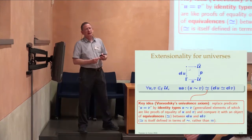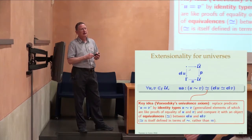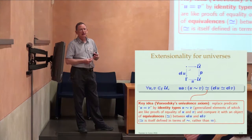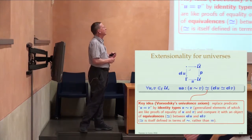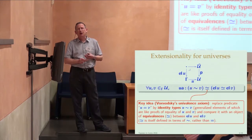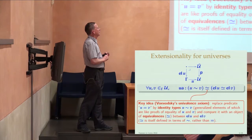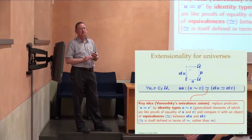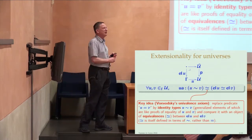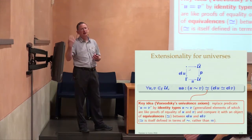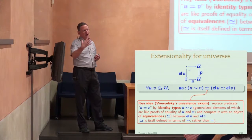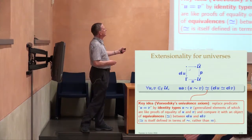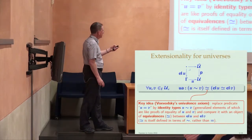The univalence axiom says that this type of proofs of identity is equivalent to the type of equivalences between the corresponding objects encoded by U and V. To say a universe is univalent is to say we have a term of this type — a global element of this type. This turns out to be a very nice axiom with lots of interesting consequences for type theory. What we're going to be doing is looking at ways in which such universes can be constructed or found.